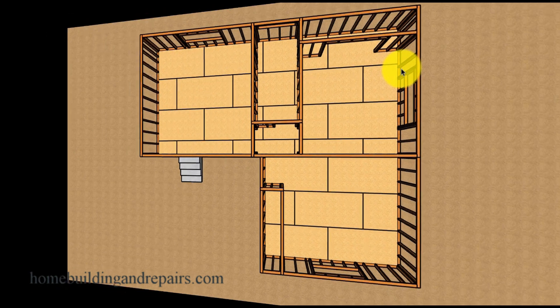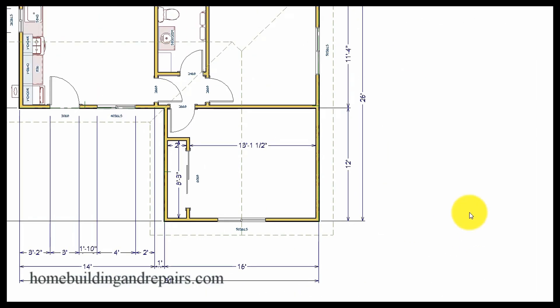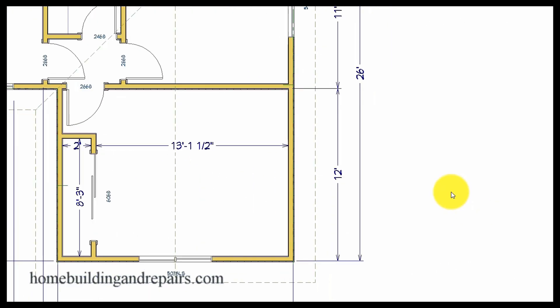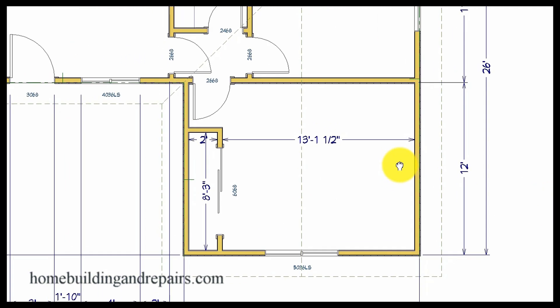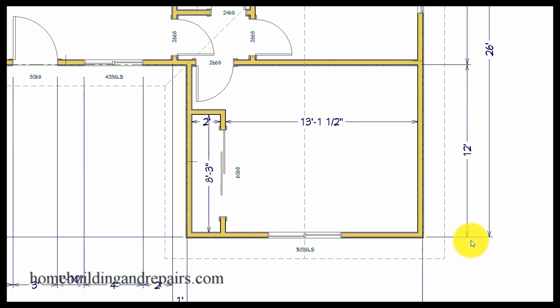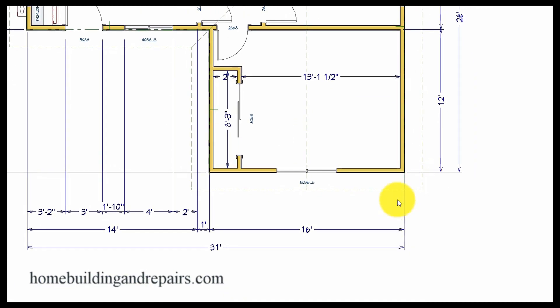Next up will be the building plans. Let's go ahead and pull up our floor plan here. And of course here you can see where the building is 12 foot by 16 foot wide here with the window centered.